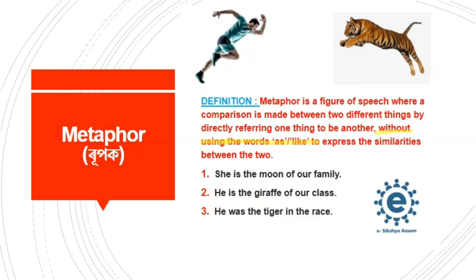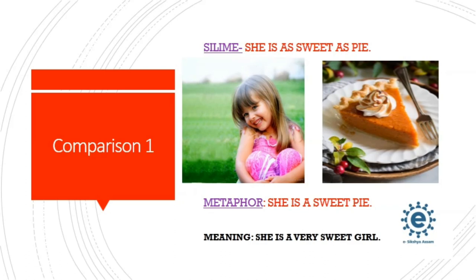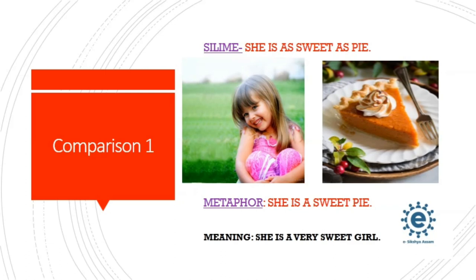Here is another example. We have a very sweet girl. Instead of saying 'she is a very sweet girl', in simile we say 'she is as sweet as pie' — using 'as', making it a simile, and we imagine how sweet and lovable she is. For the metaphor version, without using 'as' or 'like', we say directly: 'she is a sweet pie.' So one thing is said to be another.